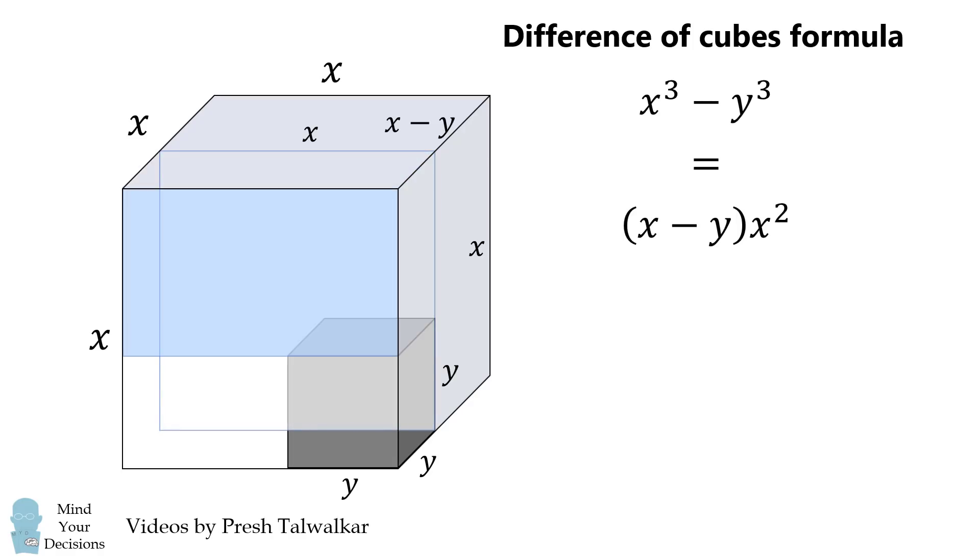We now solve for the volume of a different rectangular prism. We write its dimensions and then multiply them together to get the volume. We add that to the previous volume. We have one more rectangular prism. We finally calculate its volume.